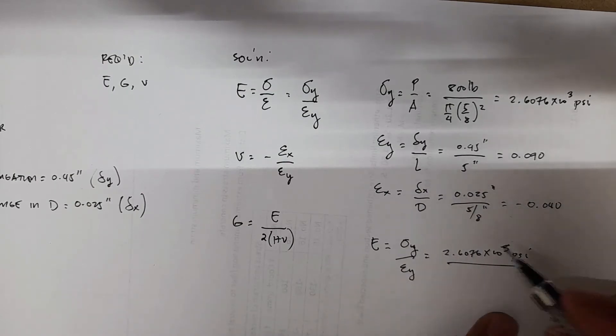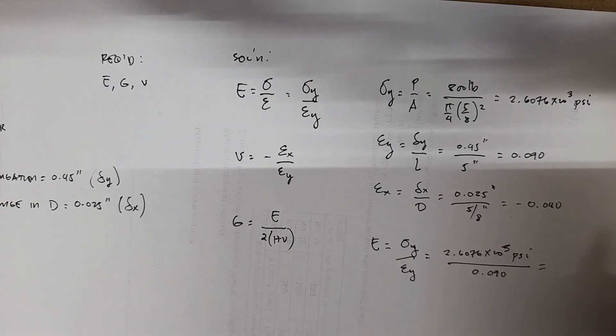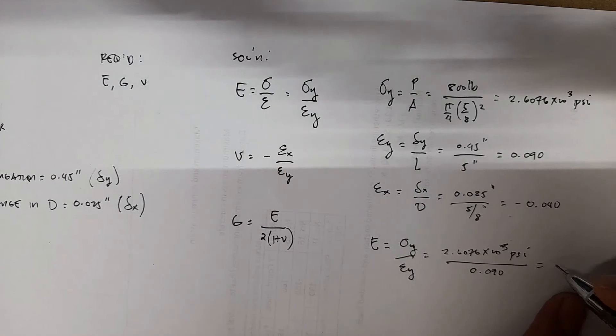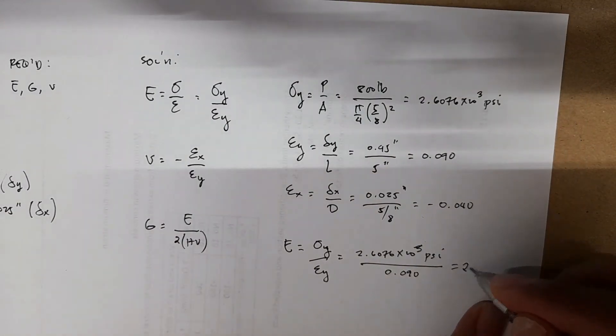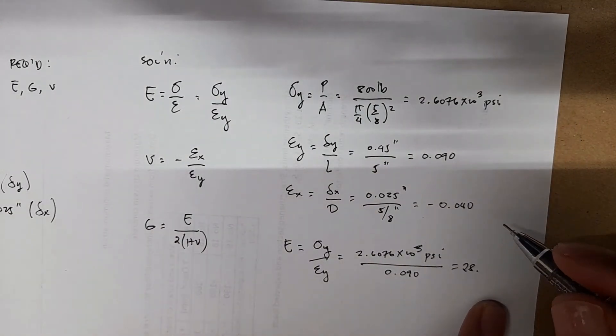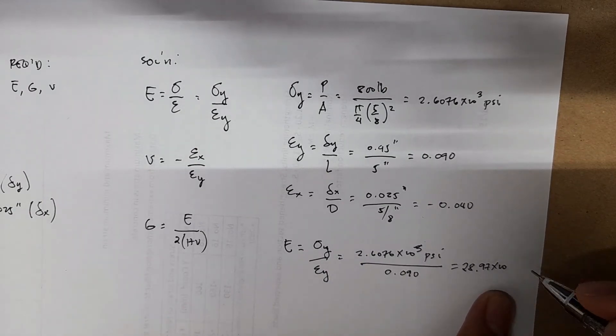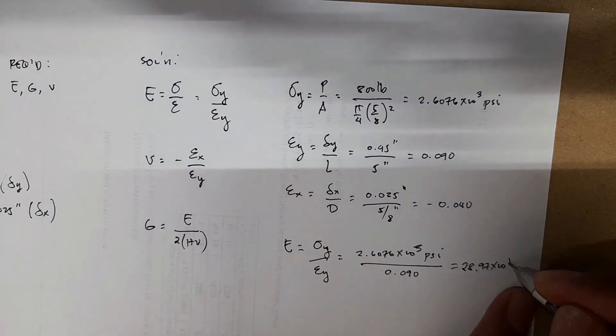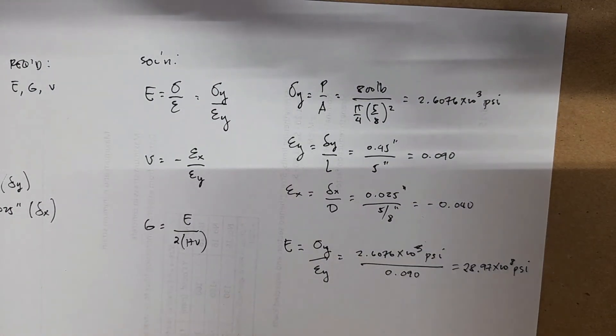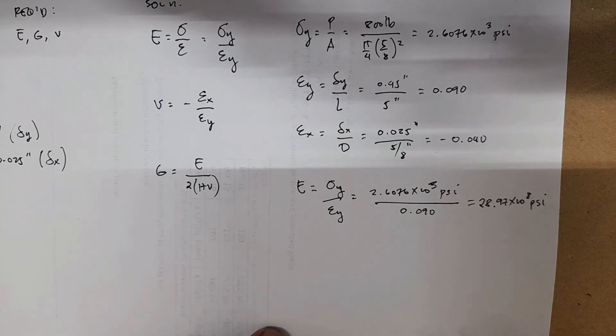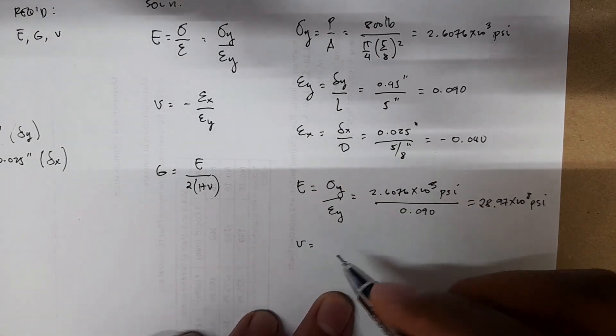The correct answer is 28.973 times 10 to the 3 psi. Then you have v, or the Poisson's ratio.